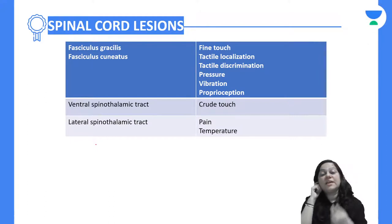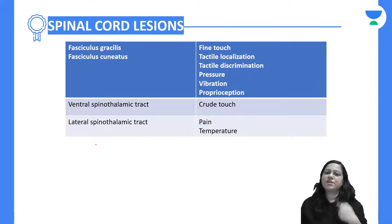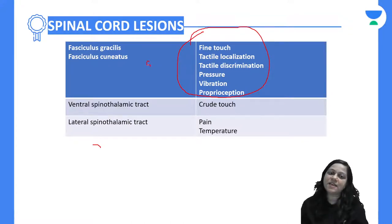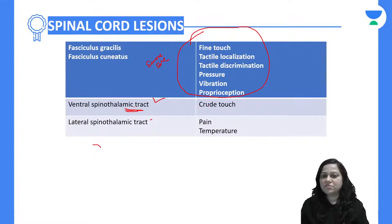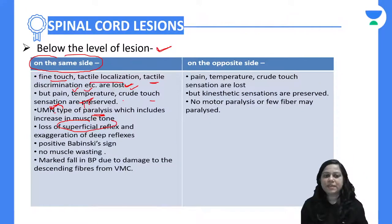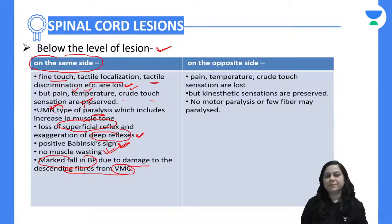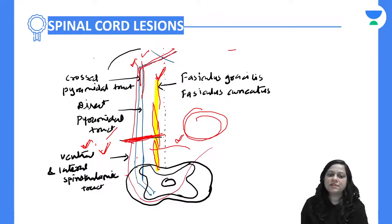Let us understand which tract carries which sensation. Fasciculus gracilis and fasciculus cuneatus carry fine touch, tactile localization, tactile discrimination, pressure, vibration sense, and proprioception — all on the same side. Ventral spinothalamic tract carries crude touch. Lateral spinothalamic tract carries pain and temperature. Deep tendon reflexes are exaggerated, Babinski sign is positive, there will be no muscle wasting, and there will be a marked fall in blood pressure due to damage to descending fibers of the vasomotor center.